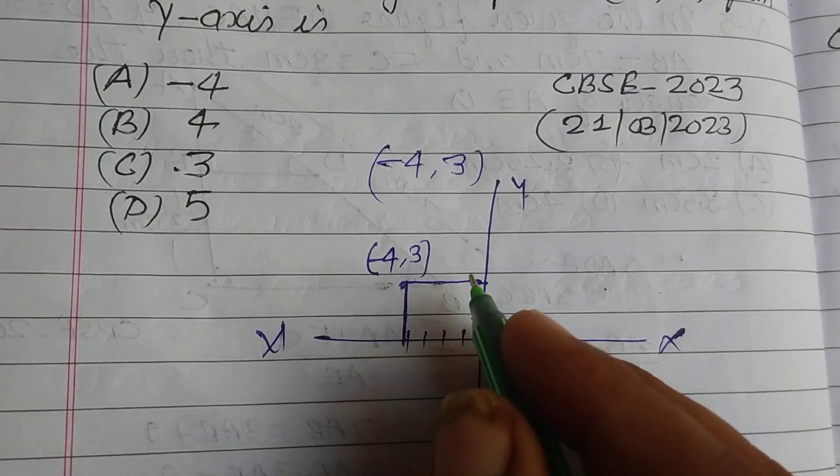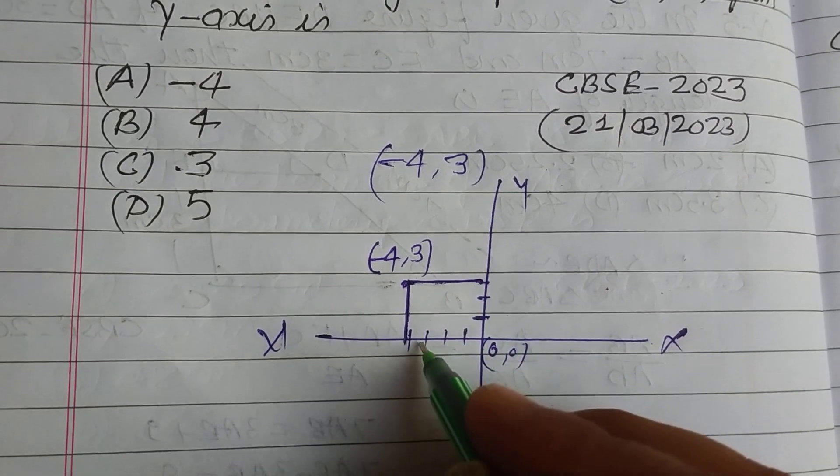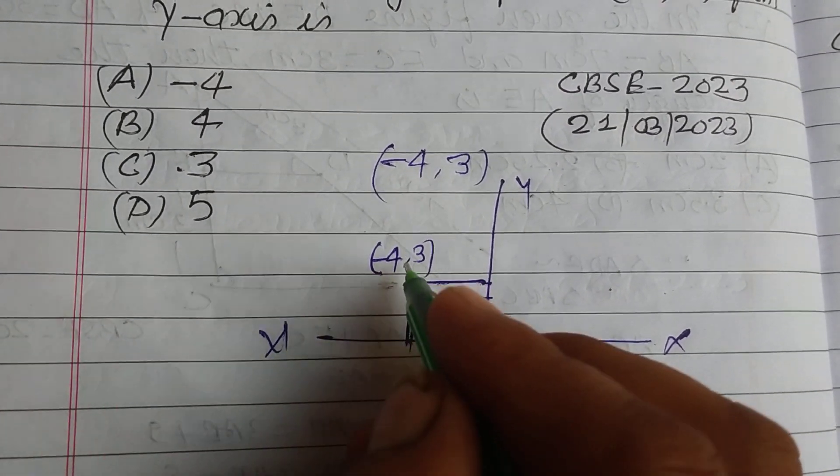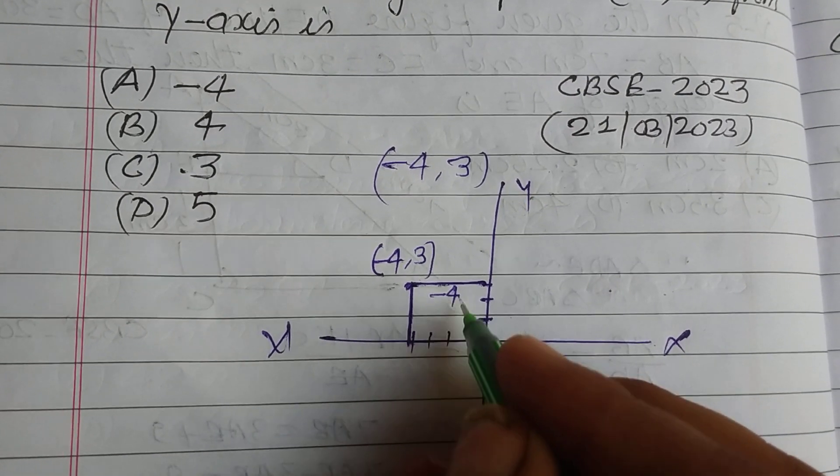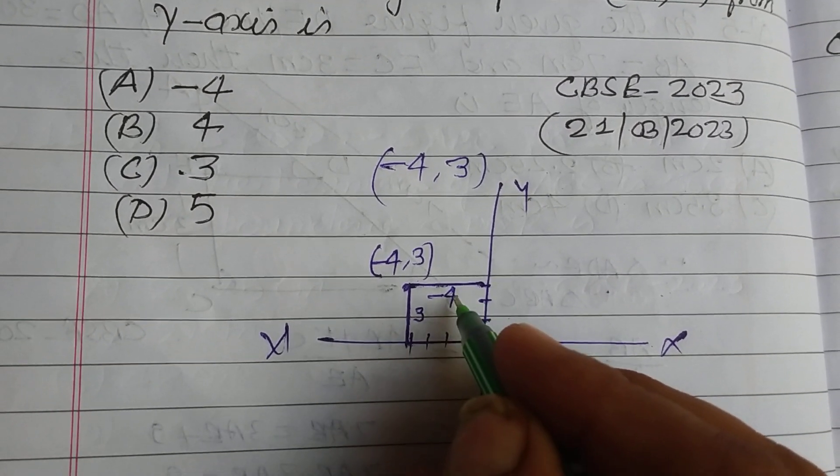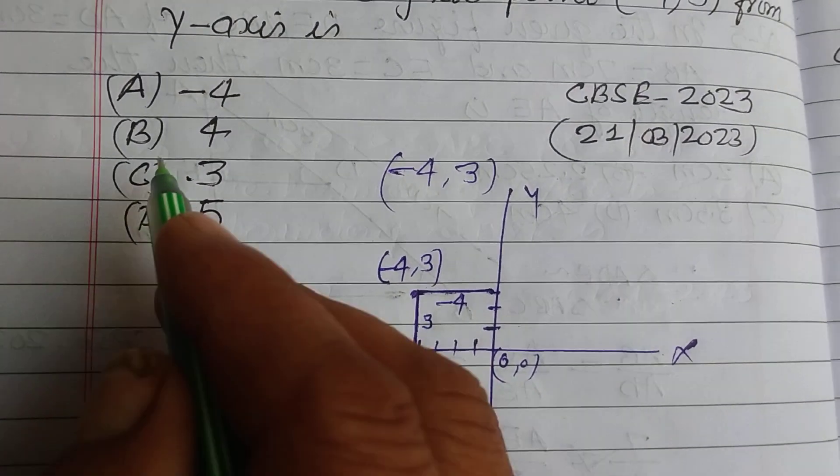So the question is asking: distance from the y-axis is what? This is the distance from x. So which is -4. This is -4 and this is 3. So the distance from the y-axis is -4.